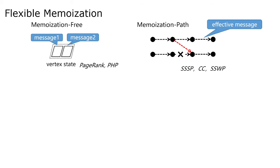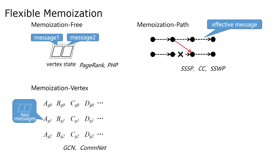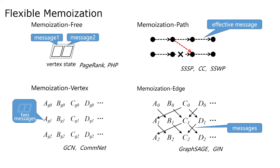In some algorithms, the received messages can be deduced from the aggregation value of received messages, such as GCN and COMNET algorithms. For these algorithms, it is sufficient to memorize the aggregation value of received messages during iterative computation. This is called memorization-vertex. Finally, when none of the above memorization policies apply, we may memorize all messages through edges. This is called memorization-edge.